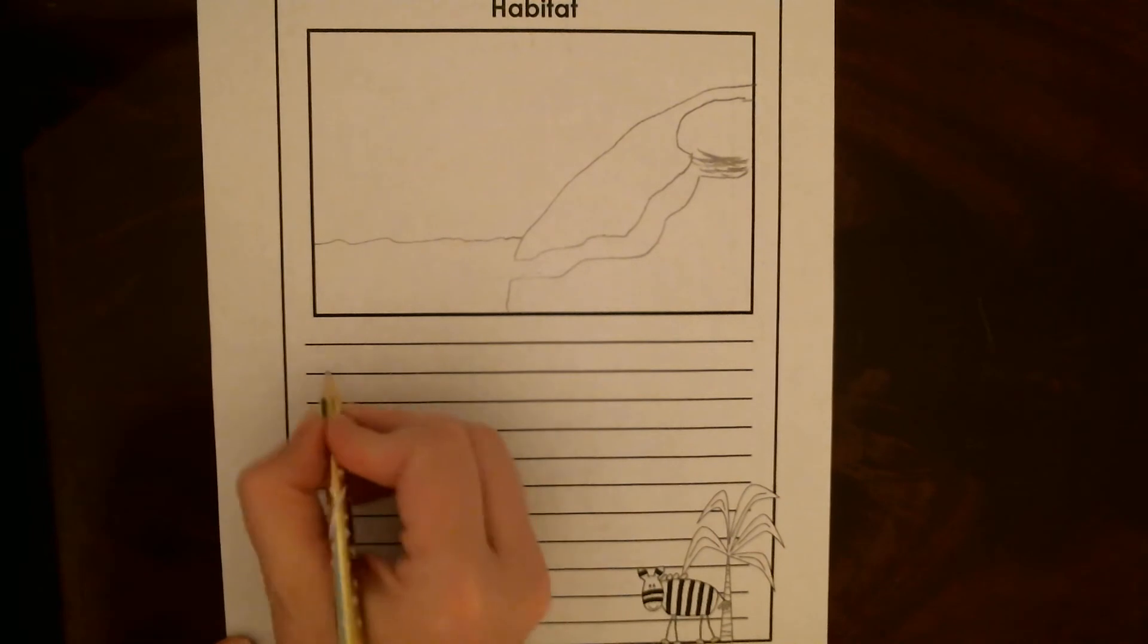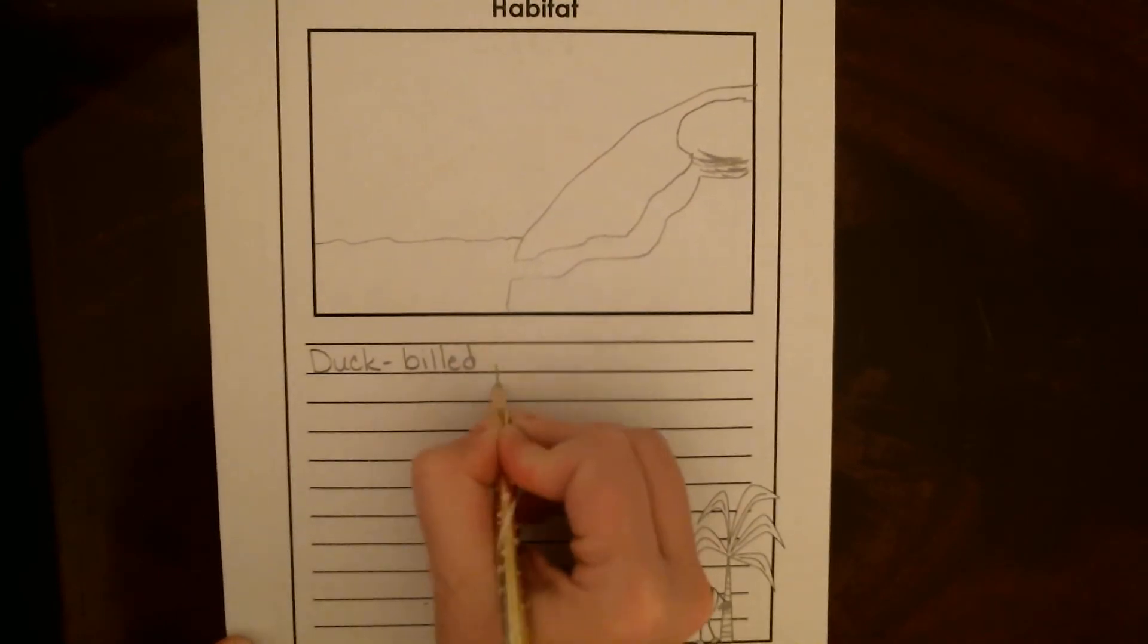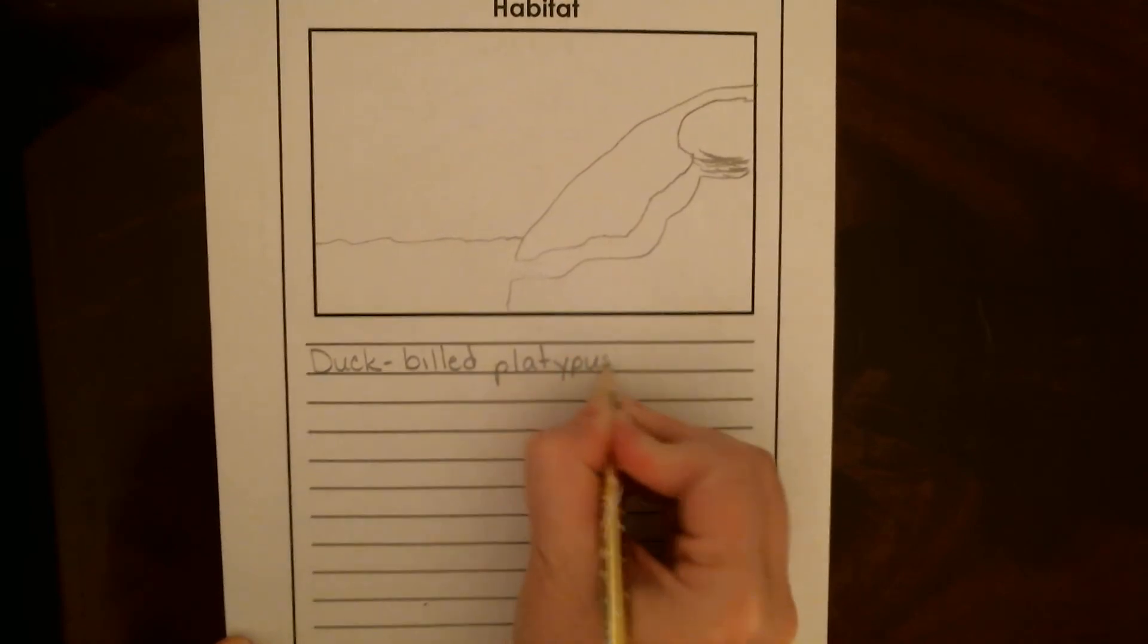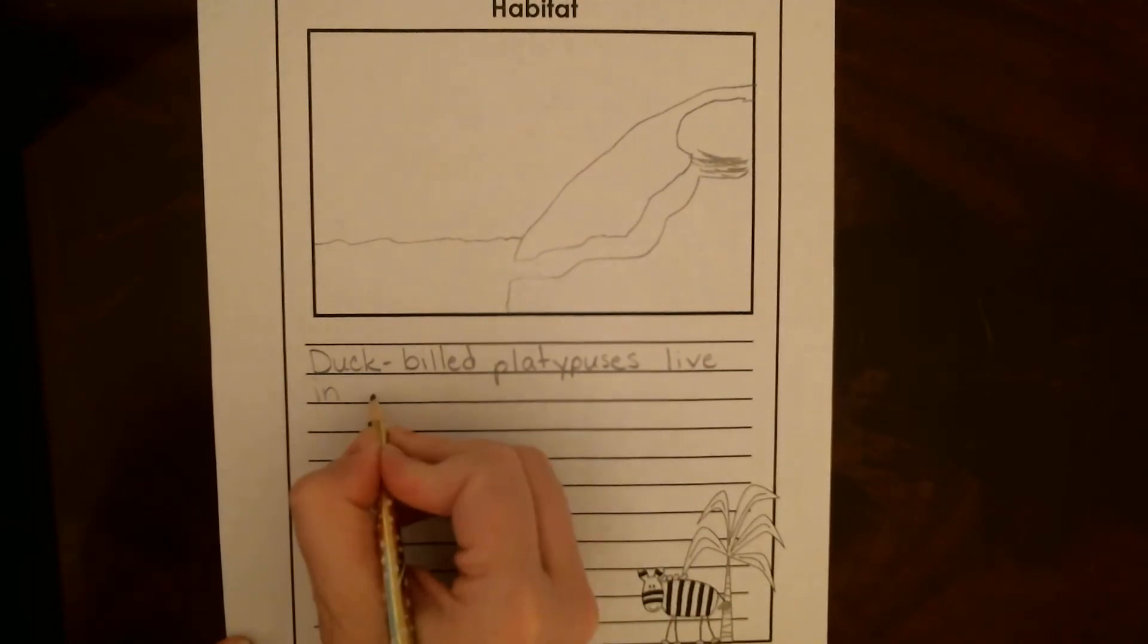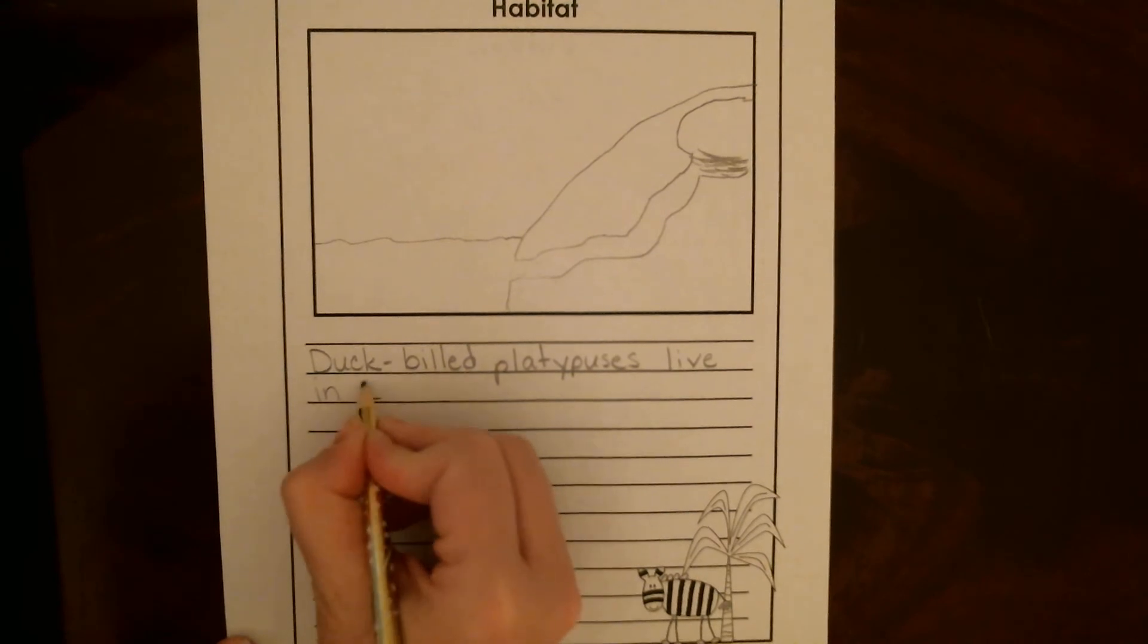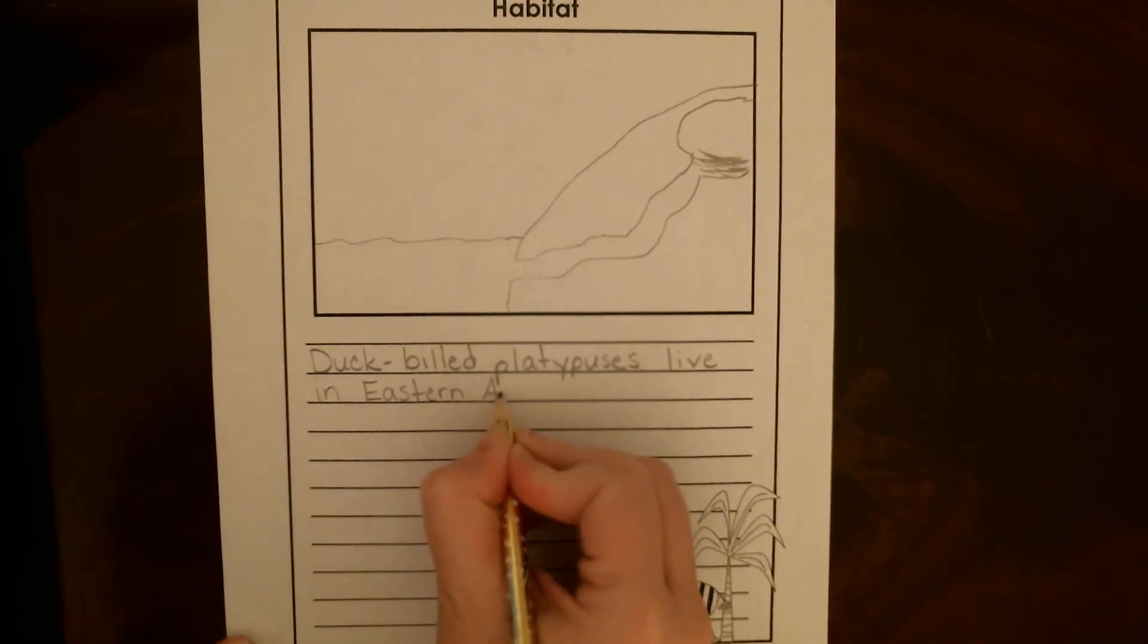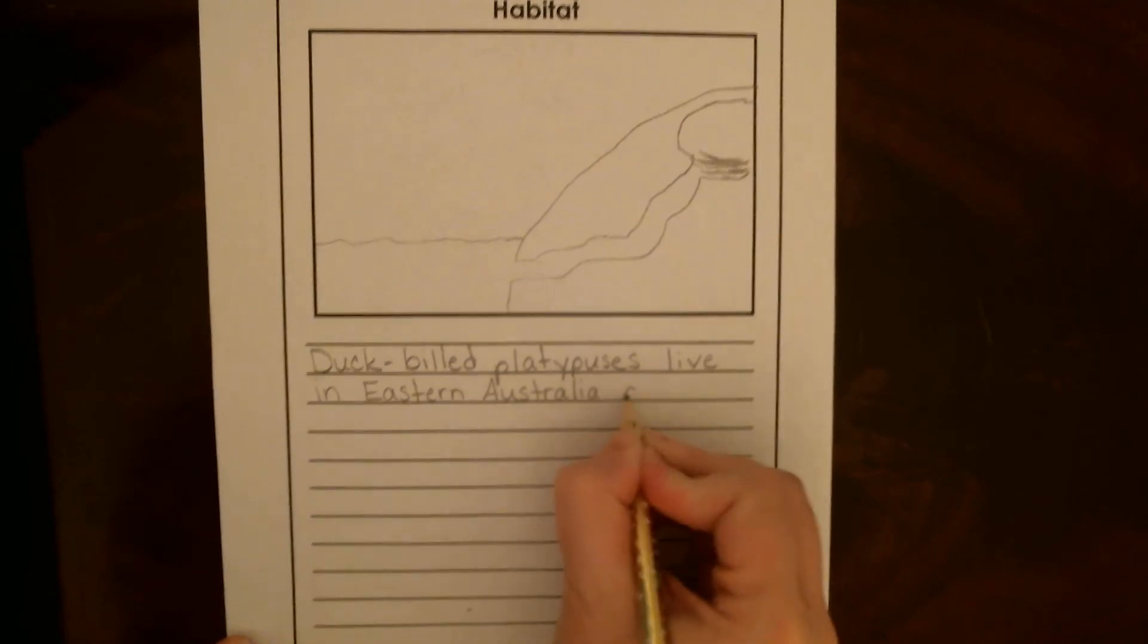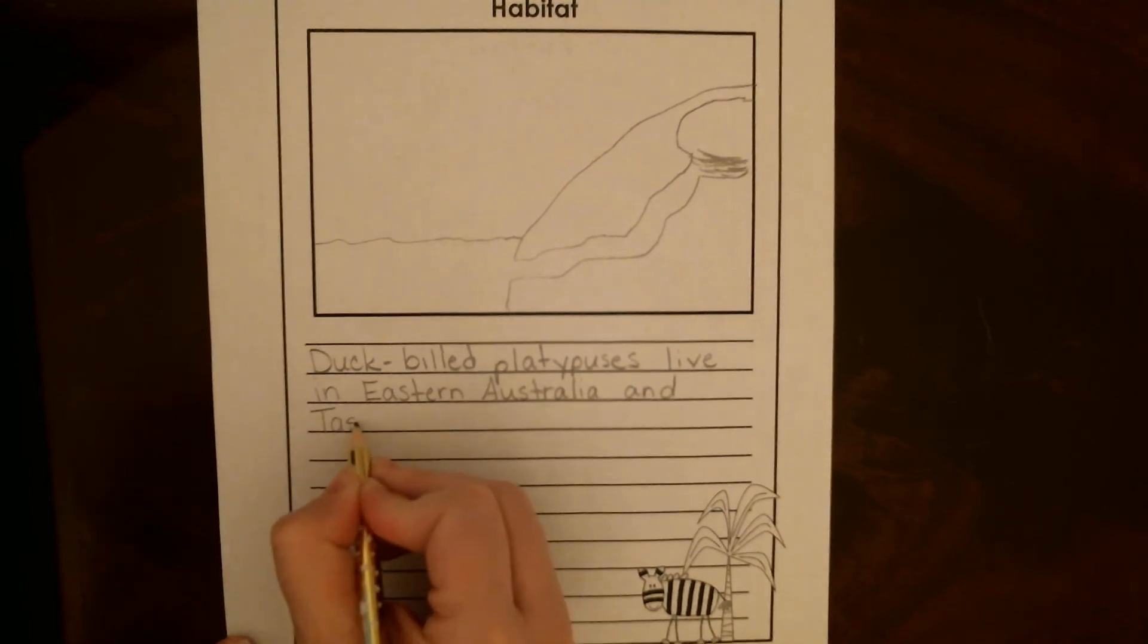Okay, so I'm going to say duck-billed platypuses live in eastern Australia and Tasmania. That's an island that's right off of Australia.